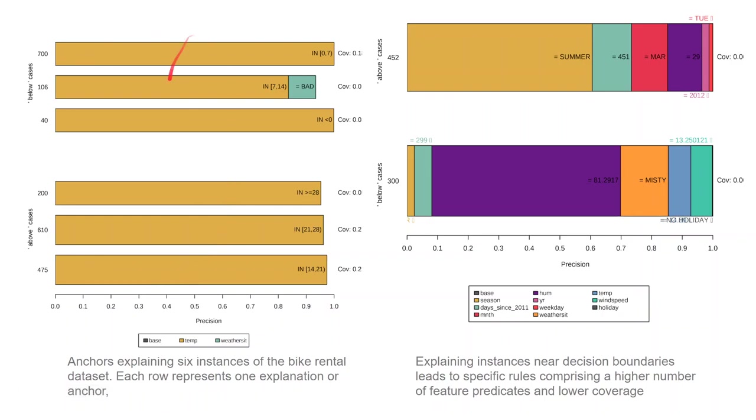most of these instances use the temperature feature to make the prediction. And the values which are used are included inside the rectangle. For example, this one has 40 predicted bike rentals if the temperature is less than zero, when it is very cold.